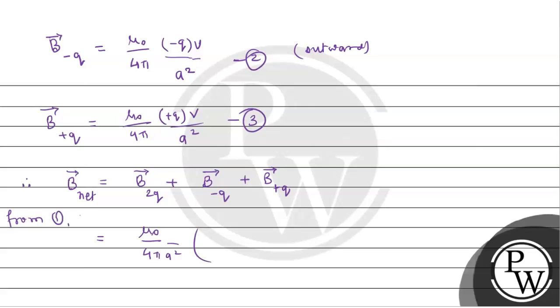So from equations 1, 2, and 3, substitute values, μ₀/4π and A² is common. And then putting values, for the charge, we take magnitude, so magnitude-wise, this minus sign will convert to plus. So you take QV plus 2QV plus QV, then finally we get μ₀/4π 4QV upon A².